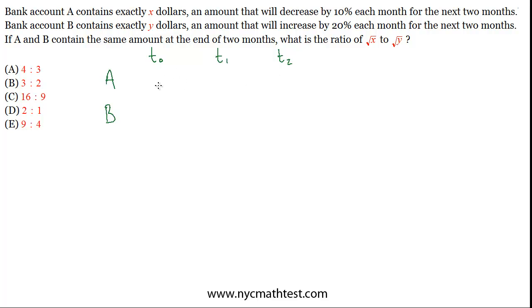Initially account A has X and account B has Y, but a month from now X will decrease by 10%, so it will be 90% of what it starts out as, so you can call that .9X. Y will have increased by 20%, so you can call that 1.2Y. And then that's going to happen again going from month 1 to month 2, so what's 90% of 90%? That's .9 times .9, which is .81X.